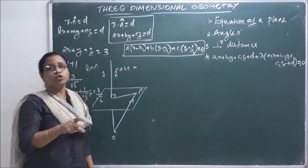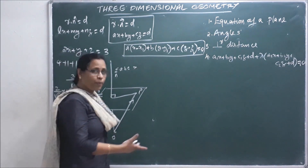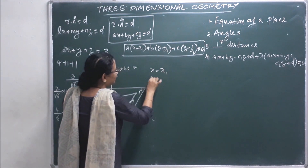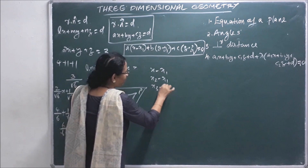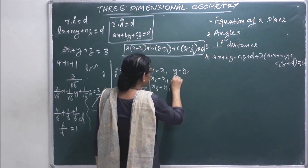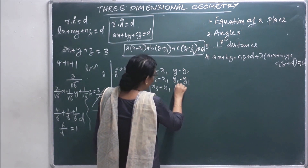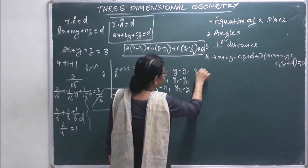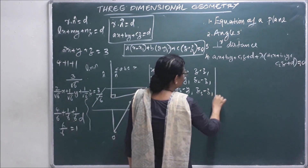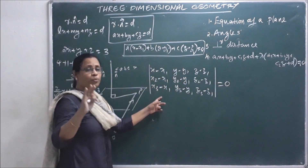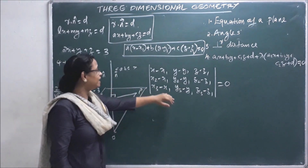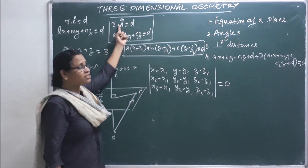We can also find the plane through three points. Using three points, we write the determinant: (x minus x₁), (x₂ minus x₁), (x₃ minus x₁); (y minus y₁), (y₂ minus y₁), (y₃ minus y₁); (z minus z₁), (z₂ minus z₁), (z₃ minus z₁) equal to 0. This is the three-point form of the plane equation.